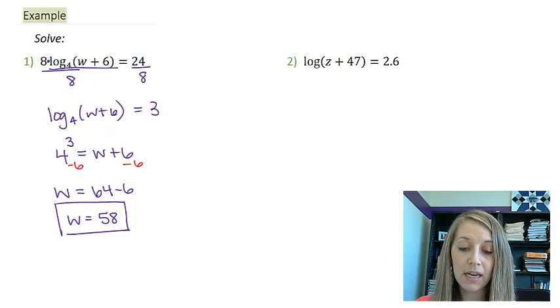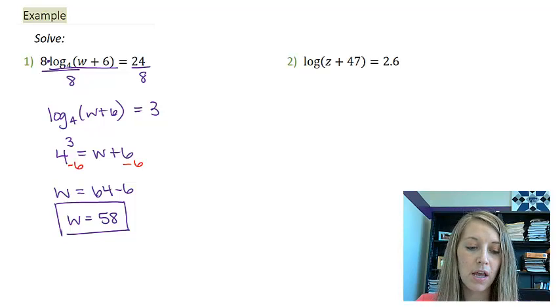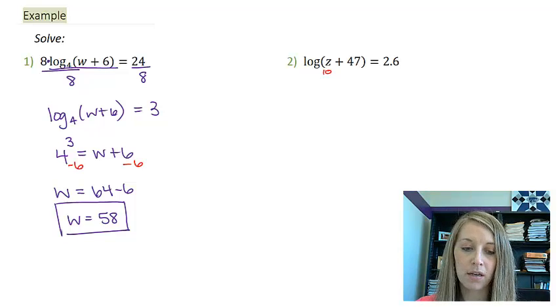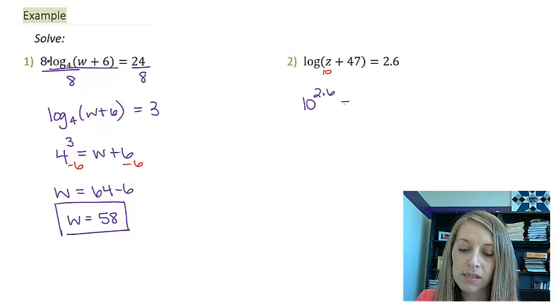My second example here is the exact same thing, except notice it does not have a base. So it is assumed to be your common logarithm of base 10. If I convert this into exponential notation, this gives me 10 to the 2.6 equals z plus 47.